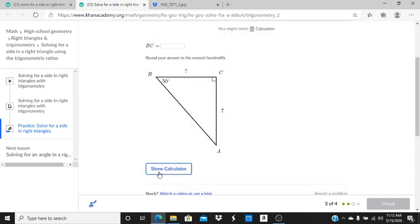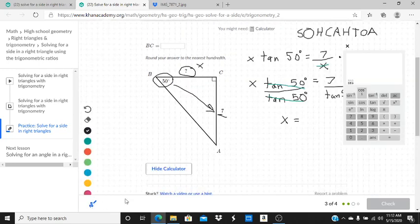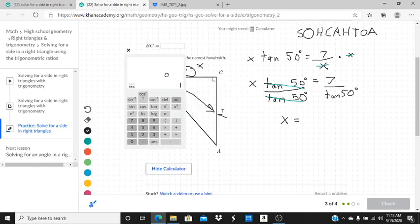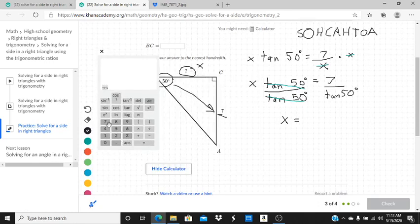So I'm going to pull out the calculator here. We're going to do 7 divided by, and I'll put it in parentheses, the tangent. I want to make sure I'm in degrees, which I am. Tangent of 50 degrees. Close out the 50. Close out the tangent. Hit equals. And I'm going to get 5.873.